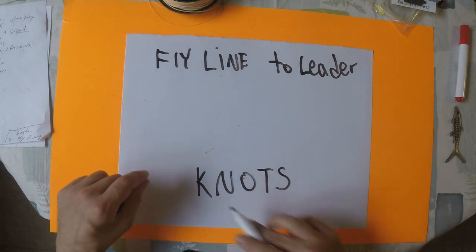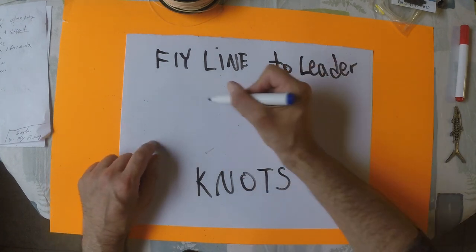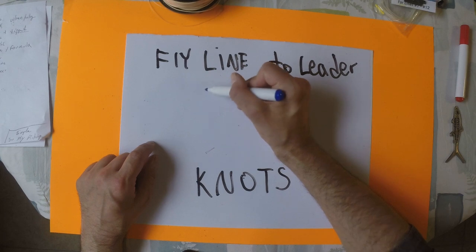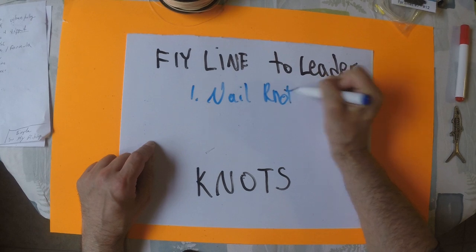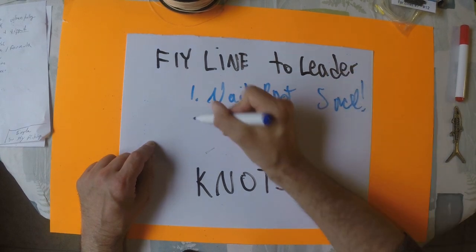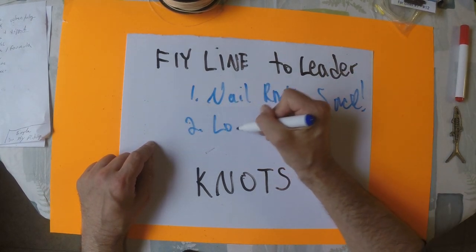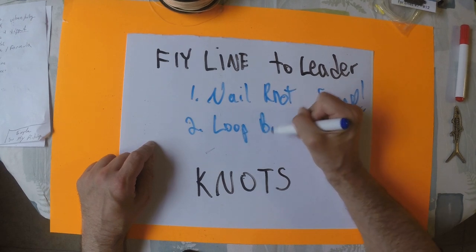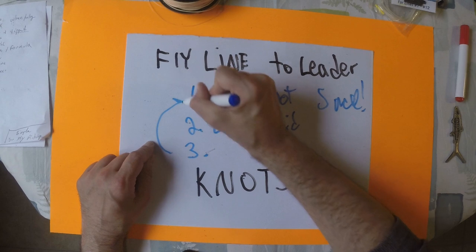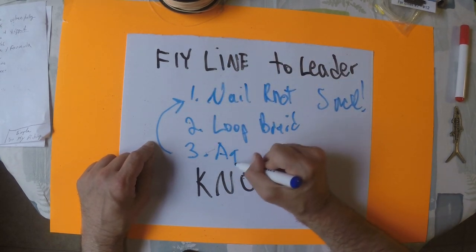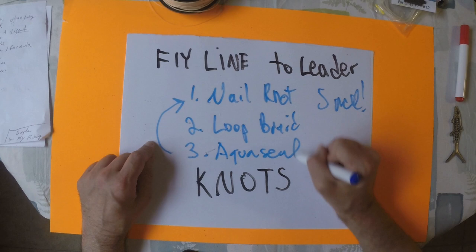Fly line to leader knots, and there's three basic ones. The first one is going to be your nail knot, which is actually just a snell. The second one is going to be a loop, a braided loop. And the third one is going to be your nail knot. But we're going to drop, put a drop of Aqua Seal to that nail knot.